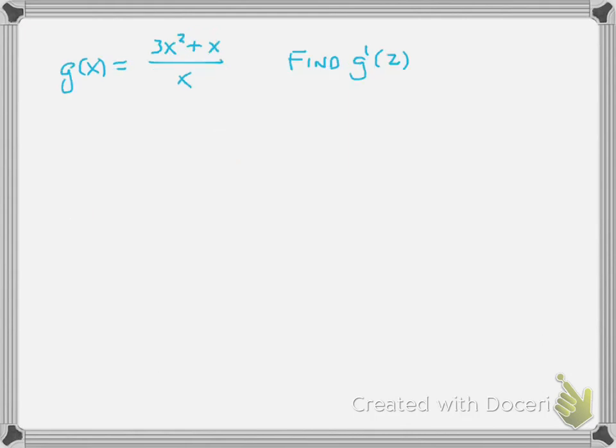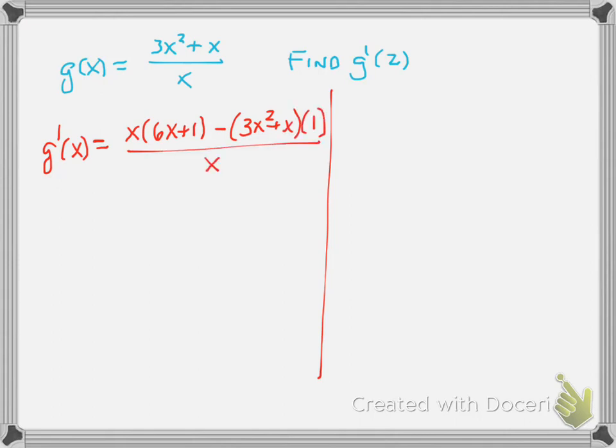So let's try one more. Now, this one I picked on purpose, because there's something interesting going on. So I want to show you two different ways to go about this same problem. Let's start with our traditional quotient rule. So we have low, d high, so there you go, minus high, d low. All over low squared.